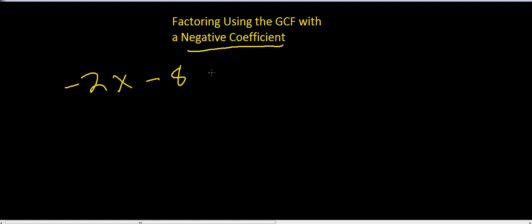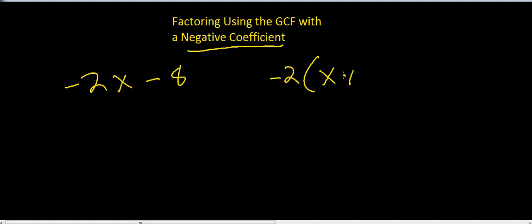We're told to factor this, so just look for your greatest common factors between 2 and 8, and that's going to be 2. Let's go ahead and factor out a negative 2. Ask yourself what number times negative 2 gives you negative 2x — well, that's an x. What number times negative 2 gives you negative 8? A negative times a positive is a negative, so that must be a positive 4.